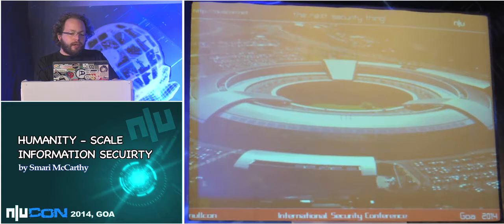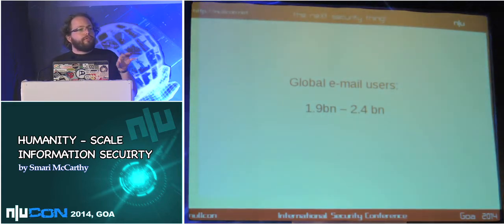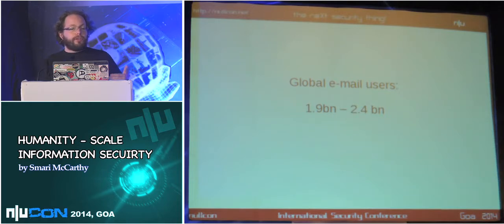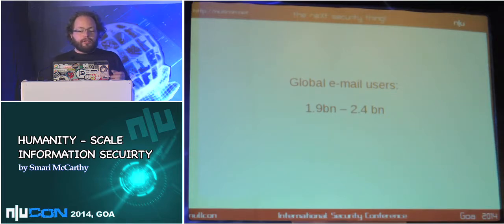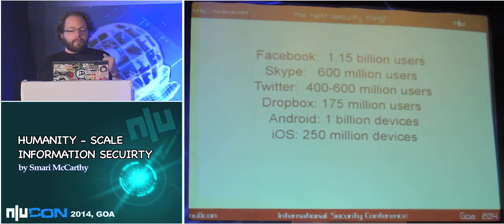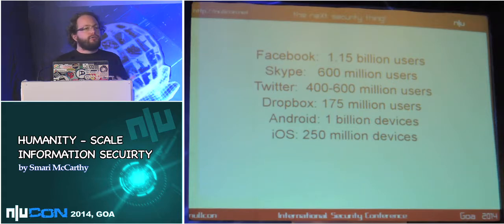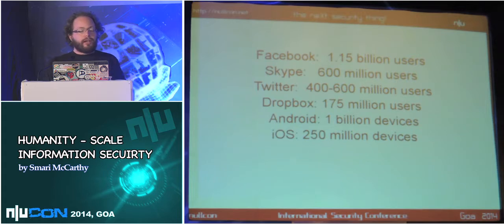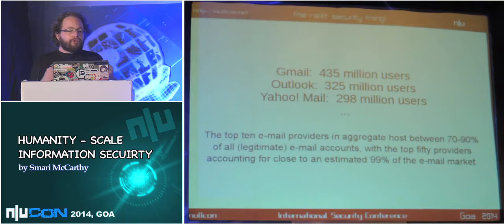There are roughly 2.5 billion people who use the internet and are therefore affected by the NSA's and the Five Eyes' surveillance effort. Conservative estimates put global email users at about 1.9 to 2.5 billion. Facebook has 1.15 billion users, Skype has 600 million, Twitter is similar, Dropbox has 175 million, there's a billion Android smartphones and tablets in circulation, 250 million iPhones and iPads. Among email users, 435 million use Gmail, 325 million use Outlook.com, and 298 million use Yahoo Mail.